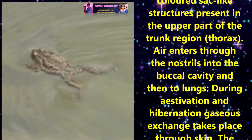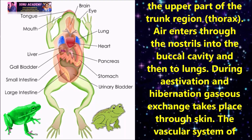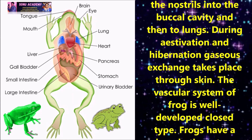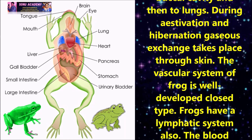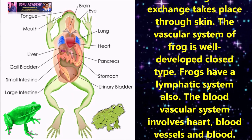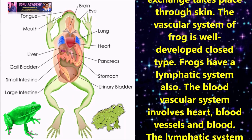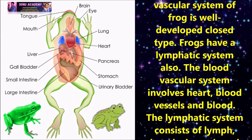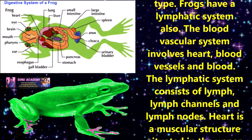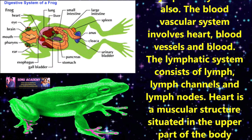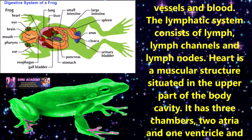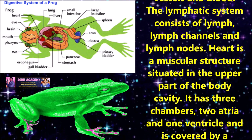The vascular system of frog is well-developed and of the closed type. Frogs also have a lymphatic system. The blood vascular system involves the heart, blood vessels, and blood. The lymphatic system consists of lymph, lymph channels, and lymph nodes. The heart is a muscular structure situated in the upper part of the body cavity. It has three chambers — two atria and one ventricle — and is covered by a membrane called the pericardium.